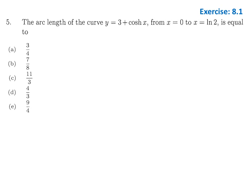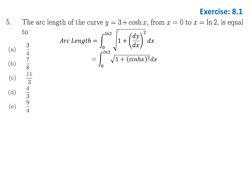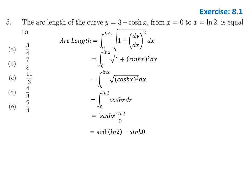Question 5 is arc length from exercise 8.1. The arc length formula using dx is ∫√(1 + (dy/dx)²) dx. Given y = 3 + cosh(x), differentiating gives sinh(x), and using the identity 1 + sinh²(x) = cosh²(x), the square root cancels to cosh(x). Integrating cosh gives sinh, evaluated from 0 to ln(2). Using the exponential form, the result simplifies to 3/4.